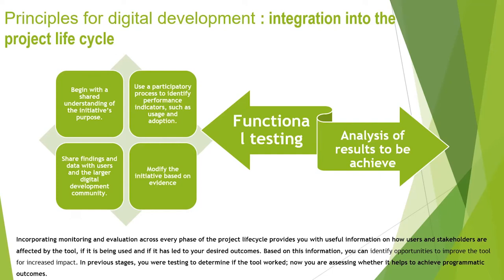This comes down to functional testing and analysis of results to be achieved. Incorporating M&E across every phase of the project lifecycle provides useful information on how users and stakeholders are affected by the tool and if it has led to your desired outcome. Based on the information you get, you can identify opportunities to improve the tool or increase impact. In previous stages you were testing to determine if the tool worked; now you're assessing whether it helps achieve pragmatic outcomes.